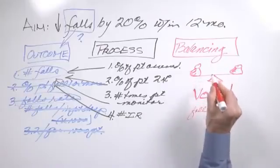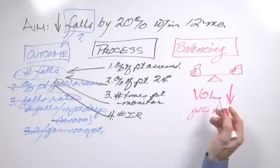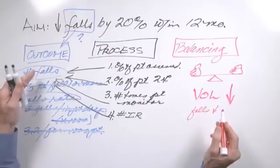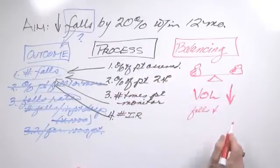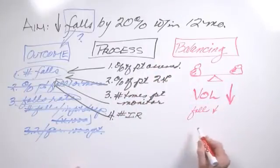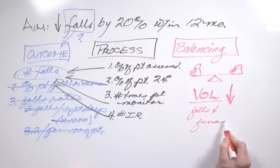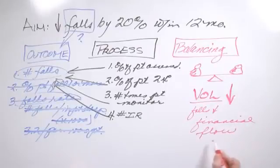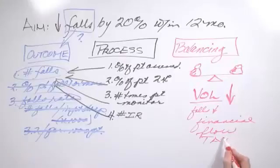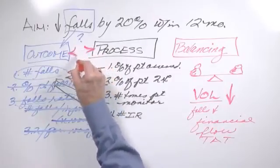So balancing measures are there to help you make sure that you're not disturbing another part of the system or making an assumption about a change in the system when, in fact, it wasn't due to anything you did but because of something you hadn't been observing. Balancing measures are typically dealing with volume. Sometimes they deal with financial.